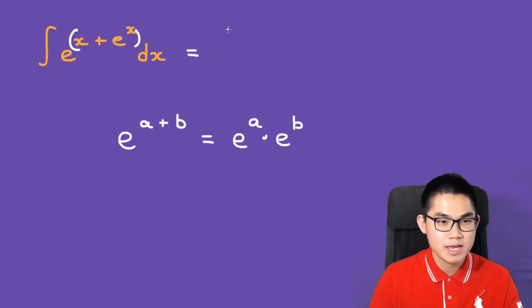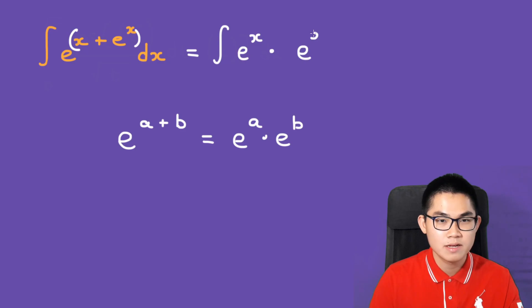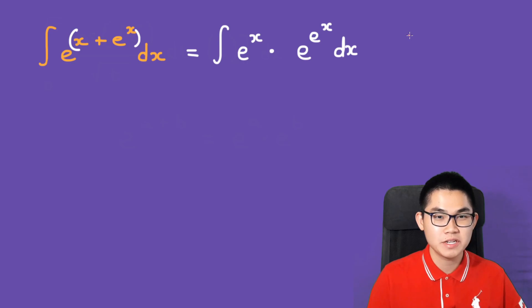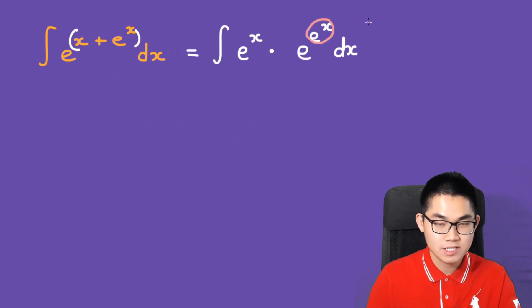This will be equal to the integral of e to the power of x times e to the power of e to the power of x, dx. And this is where we use u-substitution in order to simplify this.